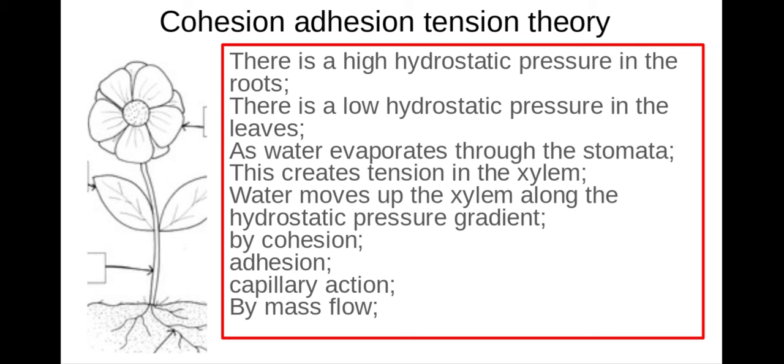So the last thing to remember here is that transpiration is the evaporation of water from the leaves whereas the transpiration stream is the movement of water from the roots up the plant to where it leaves the plant at the leaves.